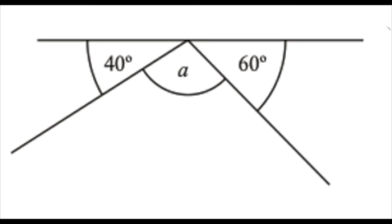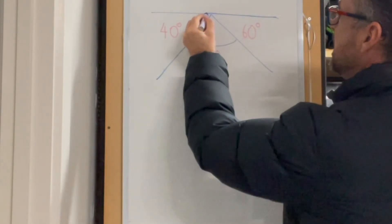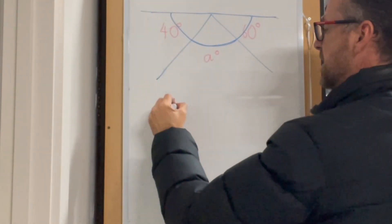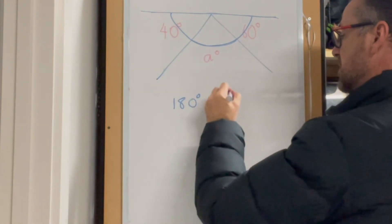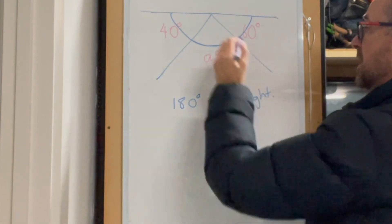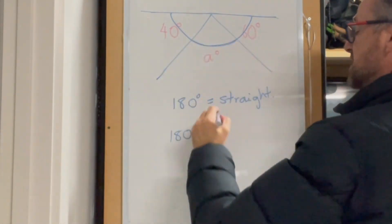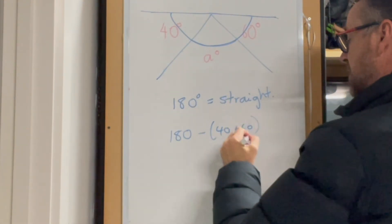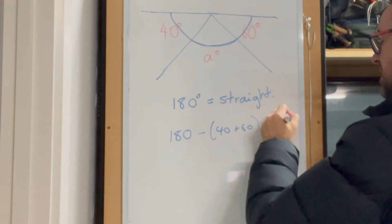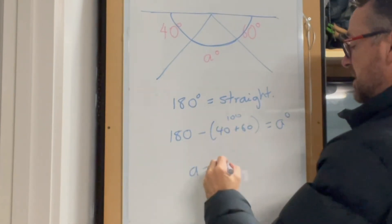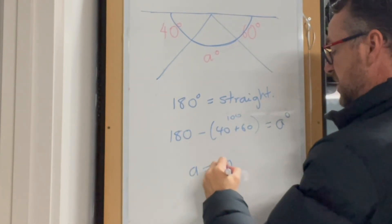Now we have a series of angles to find. The first diagram: you have a straight line, so the angles on that line must equal 180 degrees. Therefore 180 take away (40 plus 60) — that's 100 — equals A. So 180 take away 100 gives us 80 degrees.